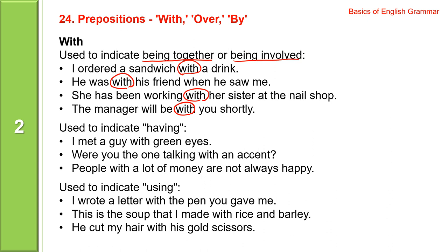With is used to indicate having. I met a guy with green eyes. Were you the one talking with an accent? People with a lot of money are not always happy.